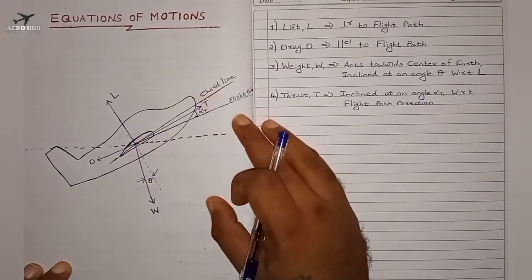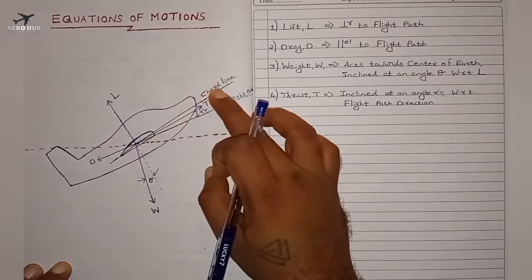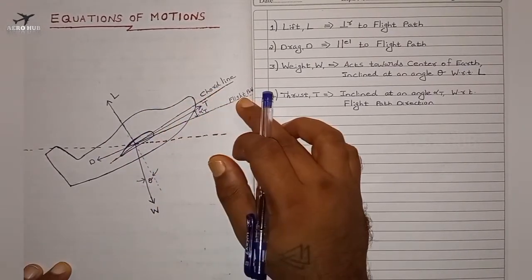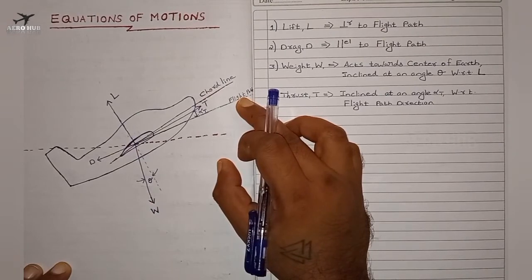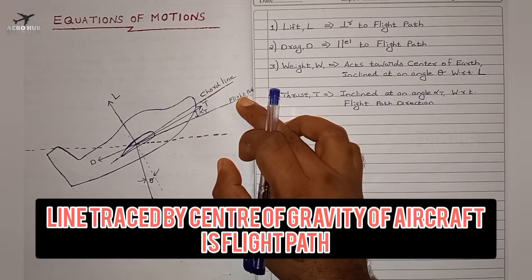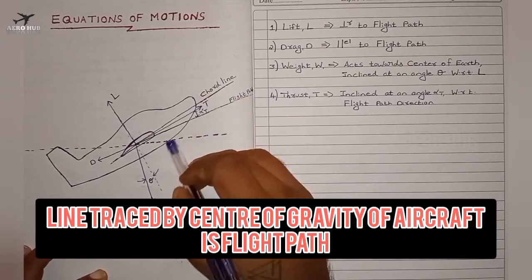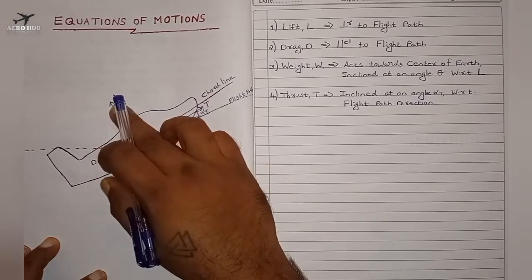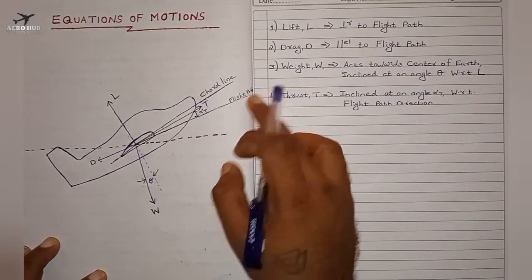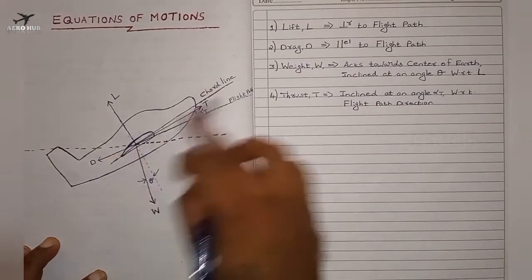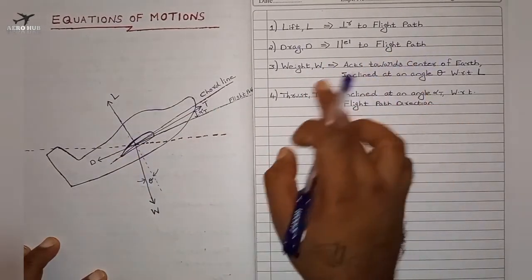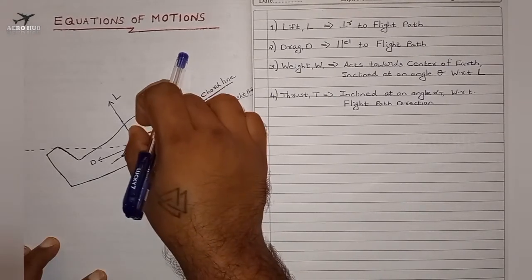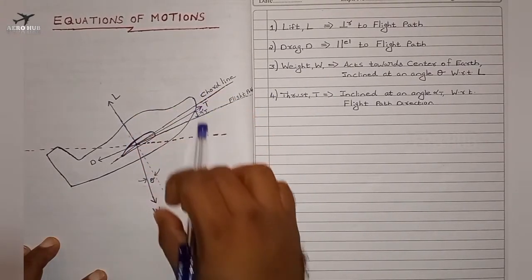This is our aircraft, and this is the flight path. The flight path is nothing but the line traced by the center of gravity of the aircraft. We have four basic forces acting on this aircraft: lift, which is perpendicular to the flight path, and drag, which is parallel to the flight path.